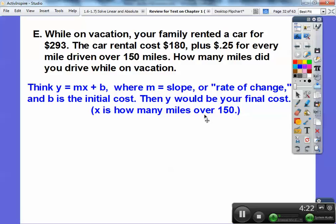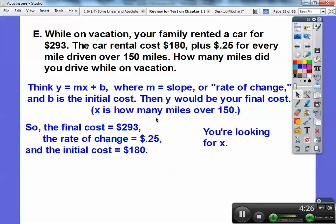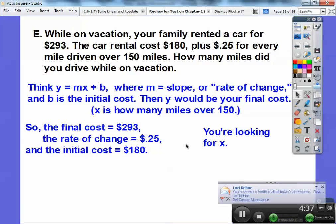Think of y equals mx + b where m is slope. And slope typically is rate of change. So the rate of change is going to be this 25 cents for every mile over 150. x is how many miles over 150. So whenever I solve for x, and I didn't answer this correctly, we'll answer it in this video right here. I already know I didn't.